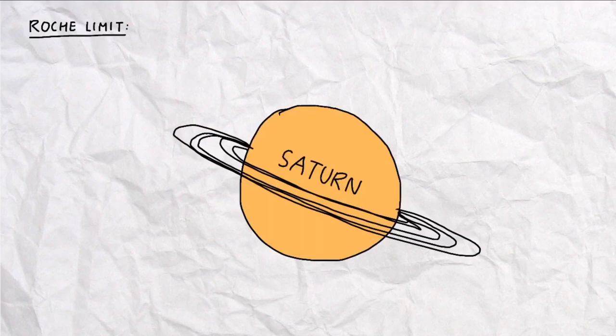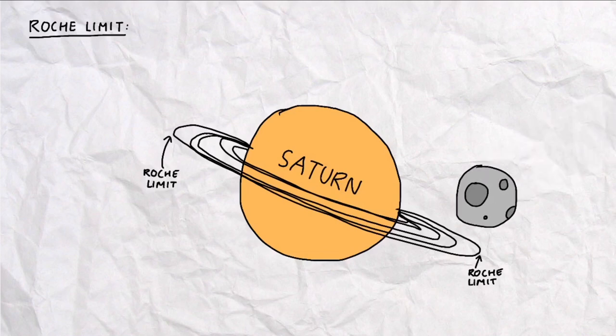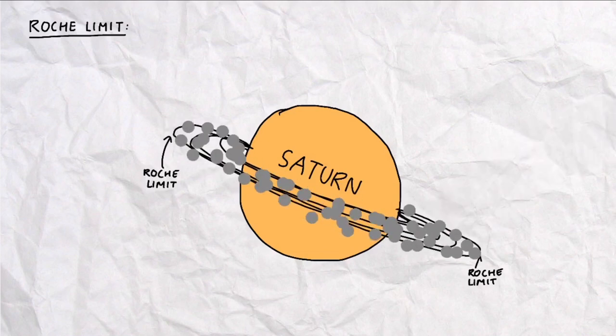When talking about the Roche limit, Saturn is definitely the best example in our solar system. So, next time when you see a picture of Saturn and its famous rings, you'll know that the place where the ring ends is precisely where the Roche limit is located, and that the rings formed because tens of millions of years ago, large meteoroids and moons surpassed the Roche limit of Saturn, hence creating the beautiful and world-known rings we see today.